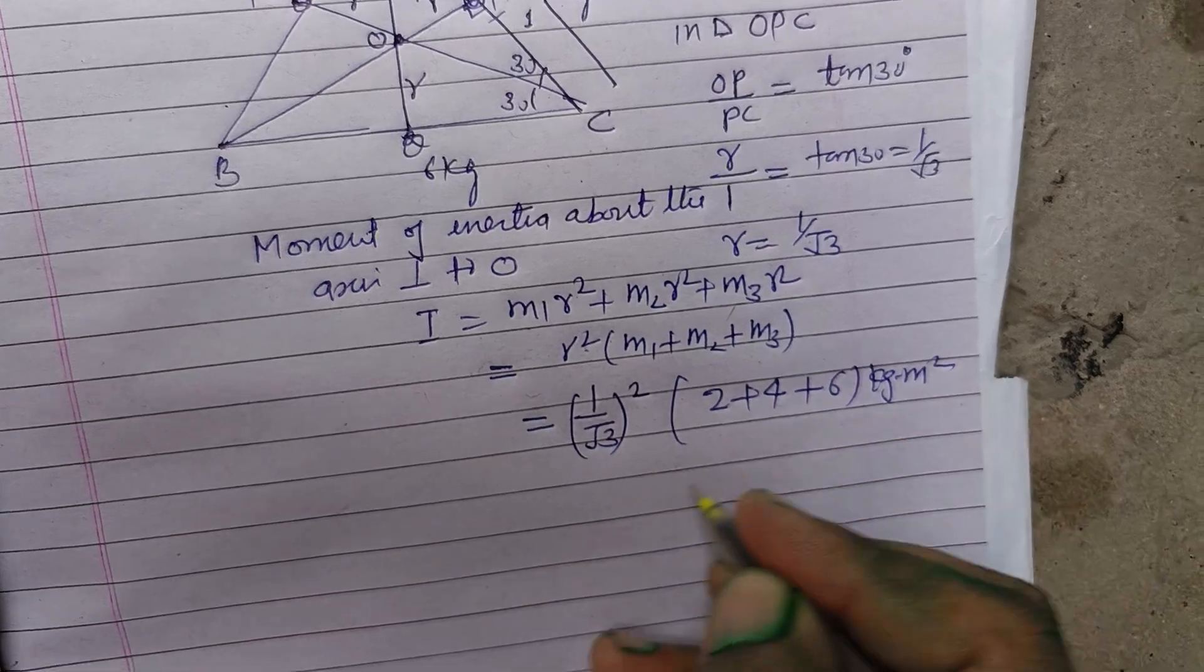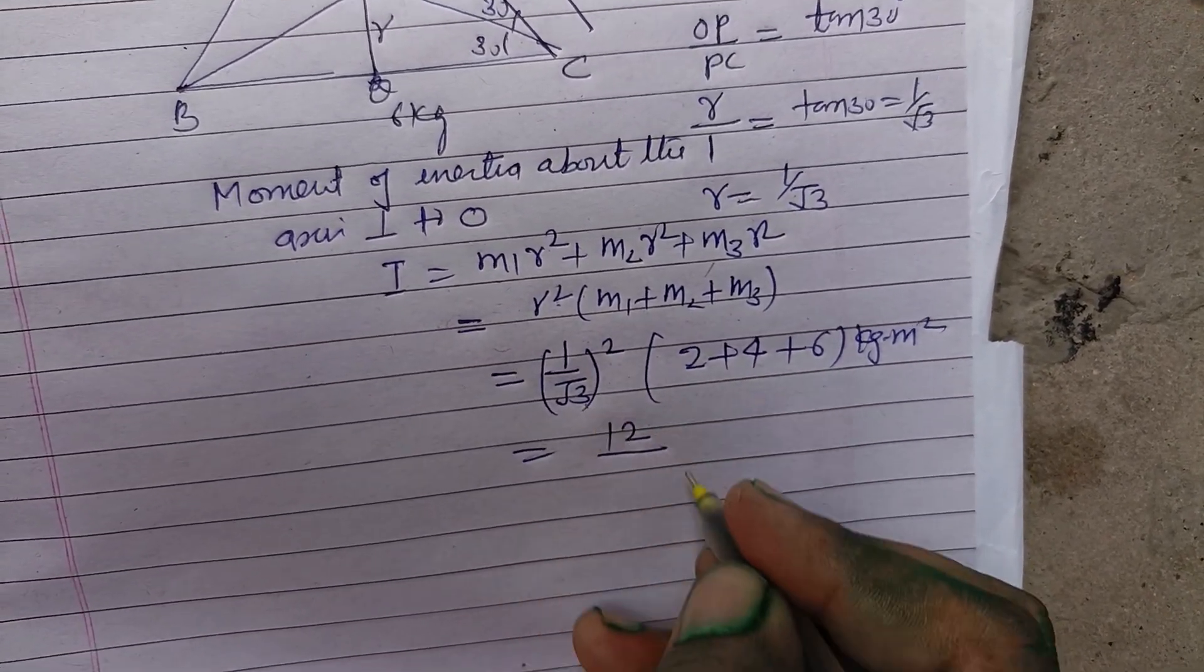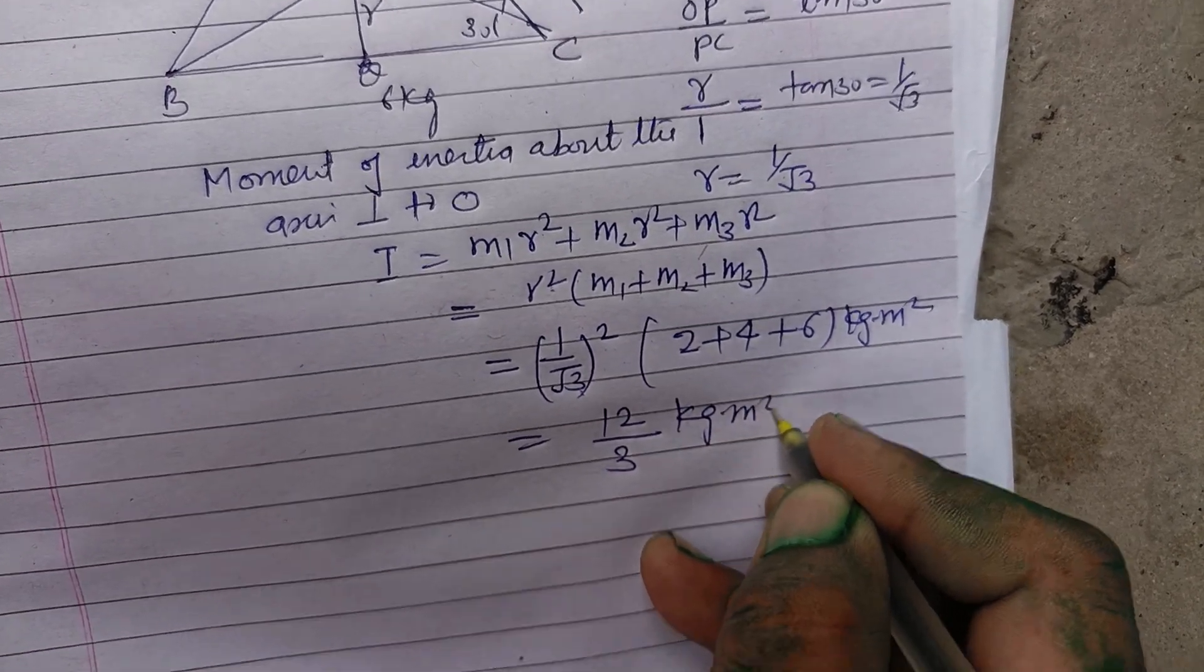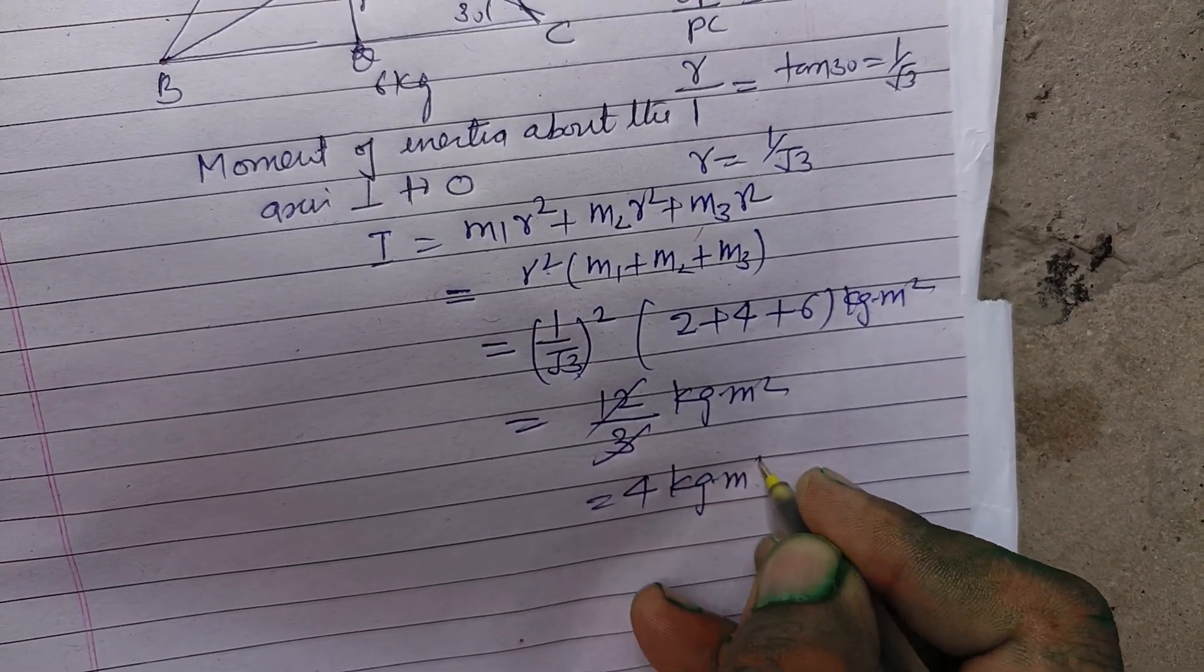KG into meter squared, 2, 4, 6 gives 12. 1 upon root 3 square is 1 upon 3. KG into meter squared, 12 upon 3 is 4 KG meter squared.